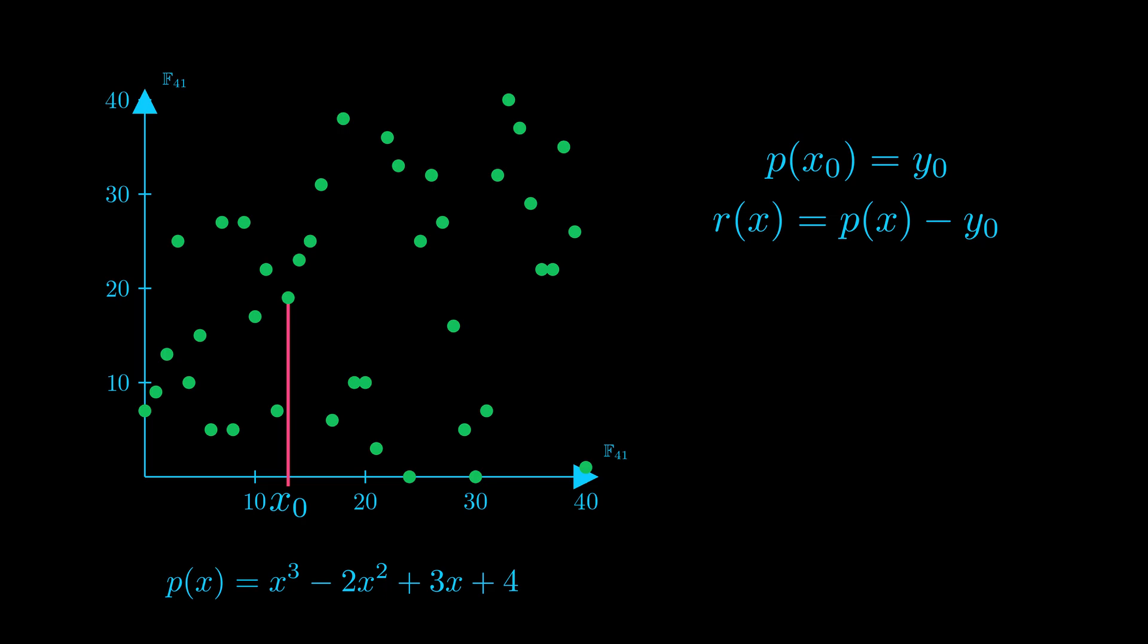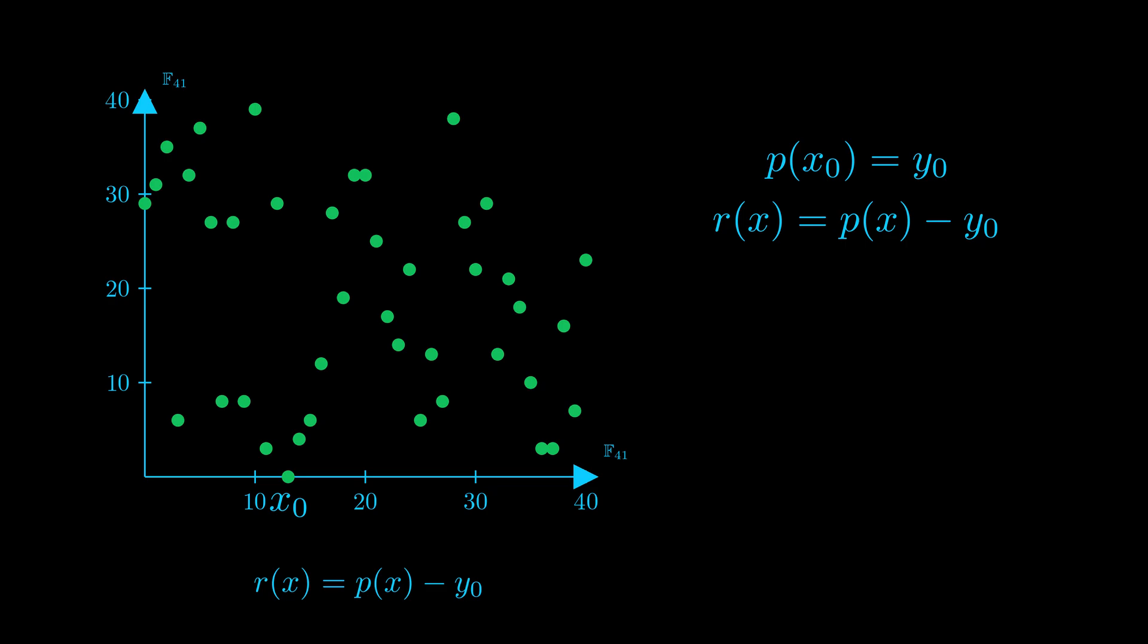If we were to construct this polynomial graphically, we would take all of the points and translate them vertically by y0. Keep in mind that the calculations are done in the prime field, hence the operation of modulo. Here, the polynomial knowledge comes in handy. This new r of x has a root at x0. And we mentioned earlier that it is possible to write a polynomial in terms of its roots, like this.